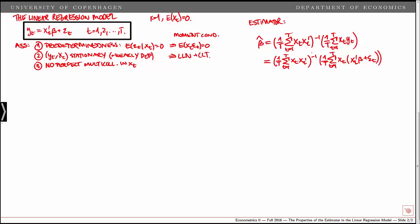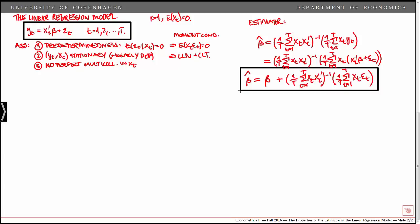We can multiply into the parentheses here, and note that the sum of the xt xt primes cancel out, so what we are left with is an expression where beta hat is equal to beta — that's the true parameter — and then we get a second term, which we call a sampling error. So again, the estimator can be written in terms of the true parameter beta plus a sampling error.